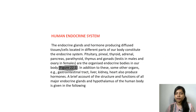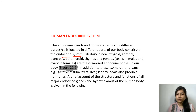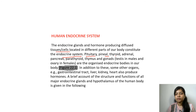The endocrine system consists of endocrine glands and hormone-producing diffused tissues and cells located in different parts of our body. Various kinds of endocrine glands present at various organs release chemicals known as hormones, and together they constitute the endocrine system. Examples include the pituitary, pineal, thyroid, adrenal, pancreas, parathyroid, thymus, and gonads — testes and ovary.